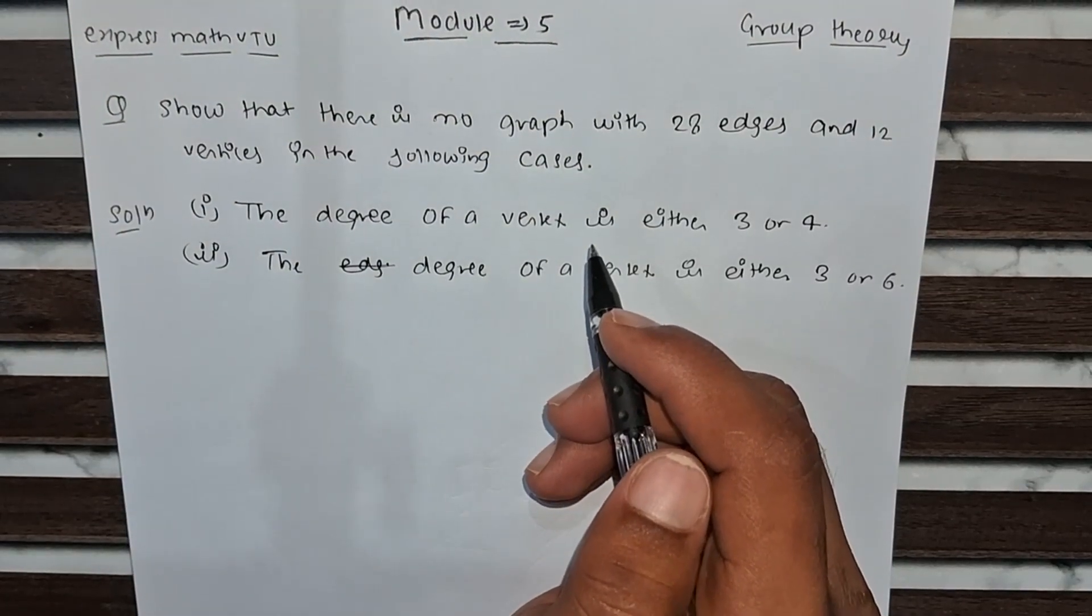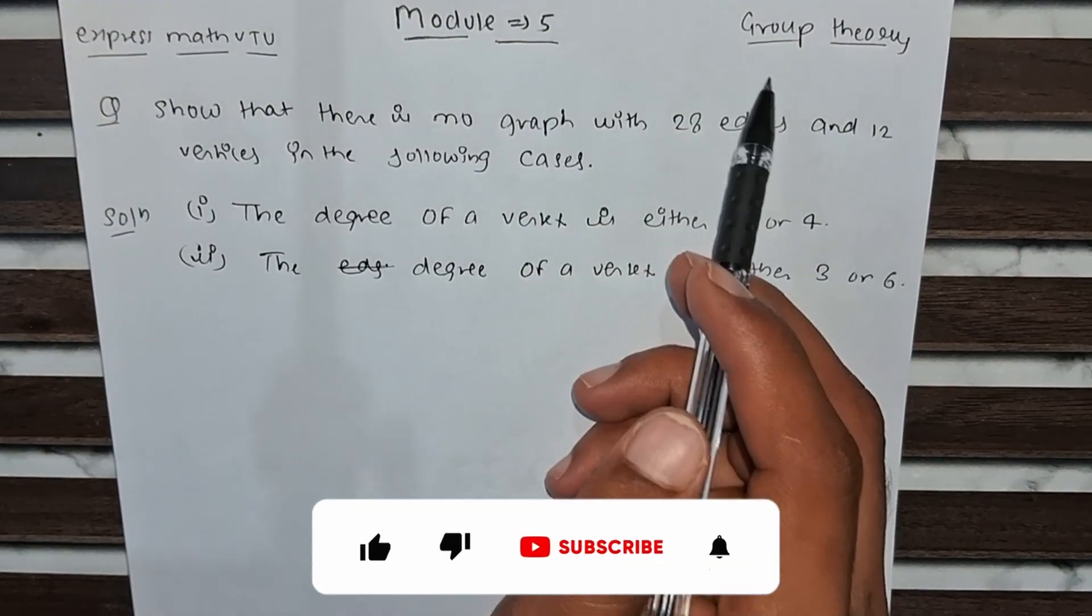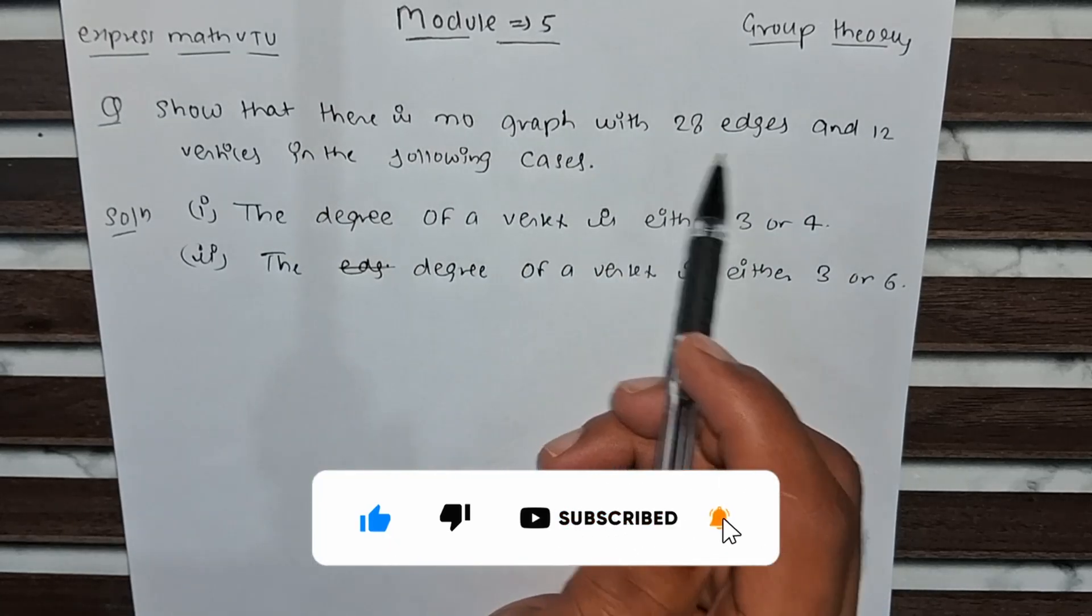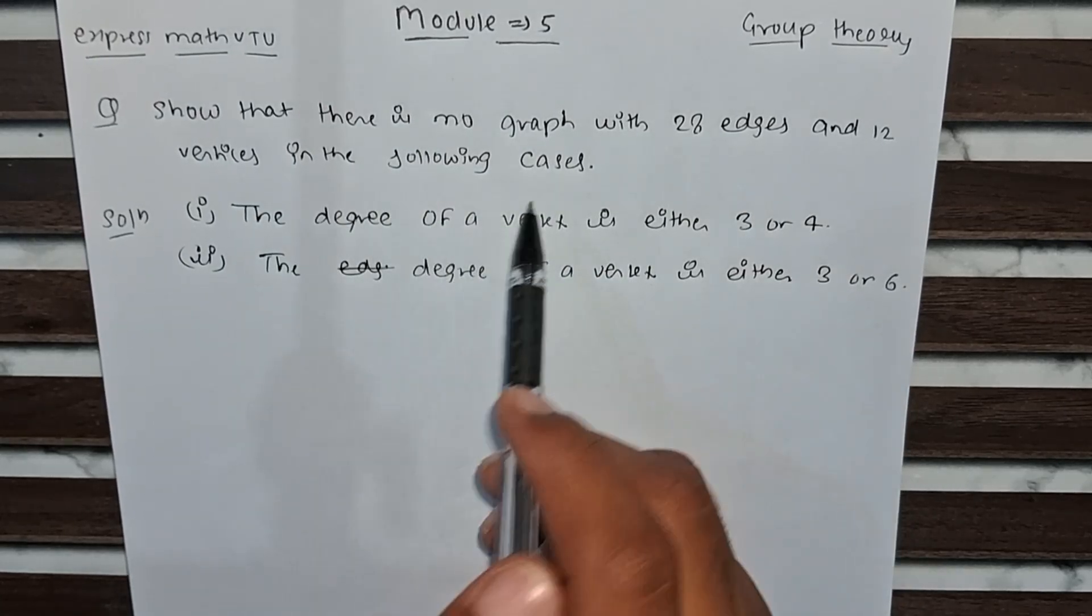Hello everyone, today we are going to solve another important problem for Module 5 Group Theory. The question is: show that there is no graph with 20 edges and 12 vertices in the following cases.